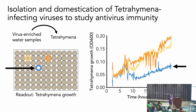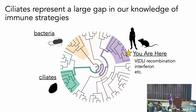My largest motivation behind this virus discovery, besides finding ciliate-infecting viruses, is that I'm an immunologist and I really want to make discoveries at this host-pathogen interface. I want to come back to this cladogram — I've added bacteria now to highlight these gaps in knowledge, but also to motivate the fact that we can still make discoveries in these organisms that we haven't really historically thought about for how they defend themselves against viruses.